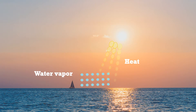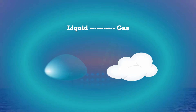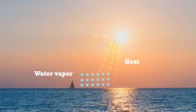This process of turning liquid into a gas is called evaporation. Most often, this occurs in the ocean, since it's the biggest body of water on Earth. The water vapour is light enough to float into the atmosphere.